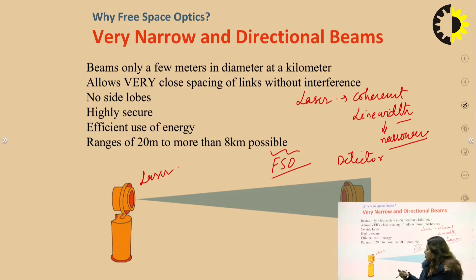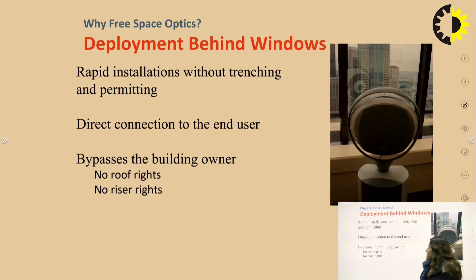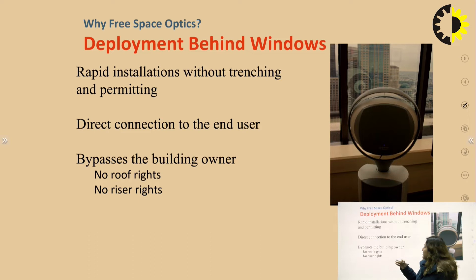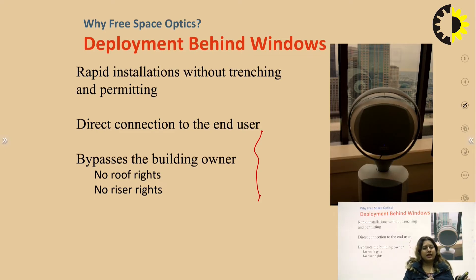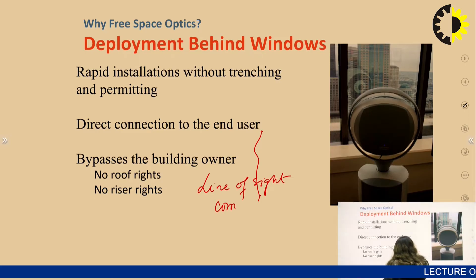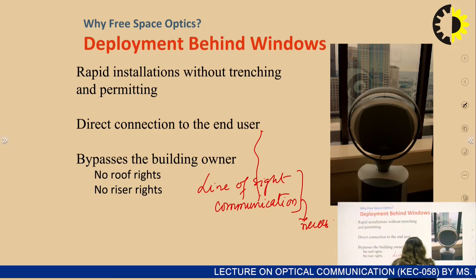Free space optical communication can be deployed behind windows in large buildings, with rapid installation without trenching and permitting. It provides direct connection to the end user, bypasses the building owner, and requires no roof site rights or riser height rights. The light travels from the laser to the detector on a line-of-sight path. Line-of-sight communication is necessary for free space optical communication systems.